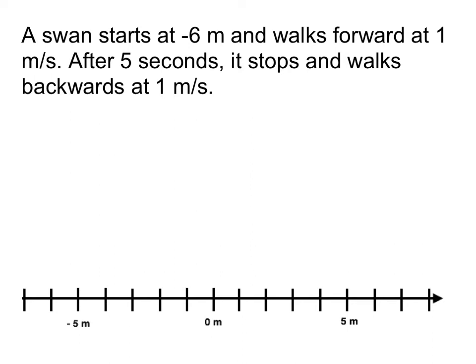All right. So for our last example of motion maps, we'll see that we can actually have one object do a few different things. So here we have a swan. It starts at negative six meters per second, and I'm going to go ahead and actually just get that down. Zero seconds, and it walks forward at one meter per second. Now it does that for five seconds. It stops and walks backwards at one meters per second. So there's a lot of information here. Let's do this piece by piece. So it's doing this for five seconds, so let's count. Forward at one meter per second. One, two, three, four, four, and five.